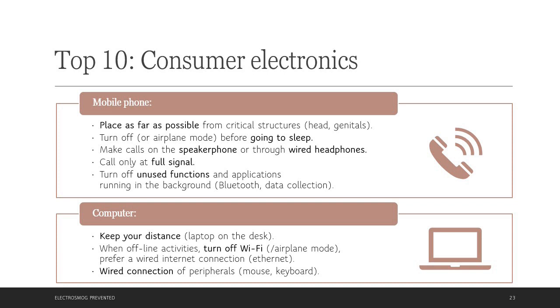I don't use Bluetooth, so I have it disabled by default. And I also do not need the data collection, so I have turned that off as well. When using computers, we can increase our distance, for example, having laptop on the desk despite its name. And when we are using it for offline activities, just turn off Wi-Fi or have it on Airplane mode. And for internet connection, prefer a wired internet connection via ethernet cable, if it's possible. It also helps to have wired connection of peripherals, like mouse or keyboard.